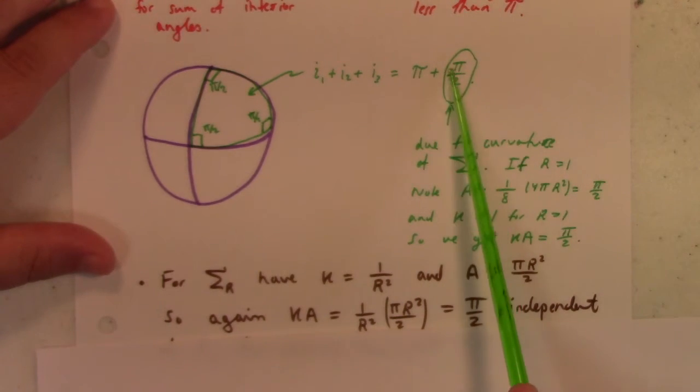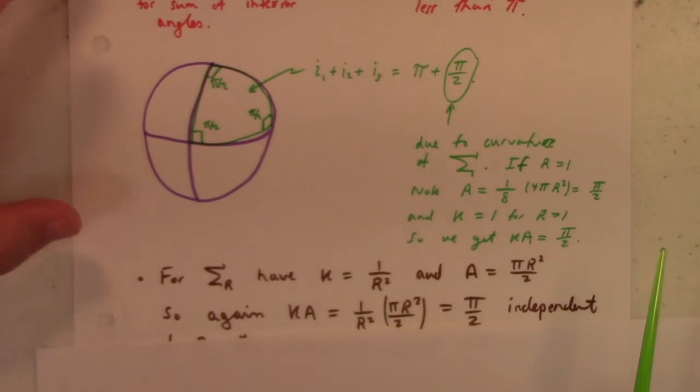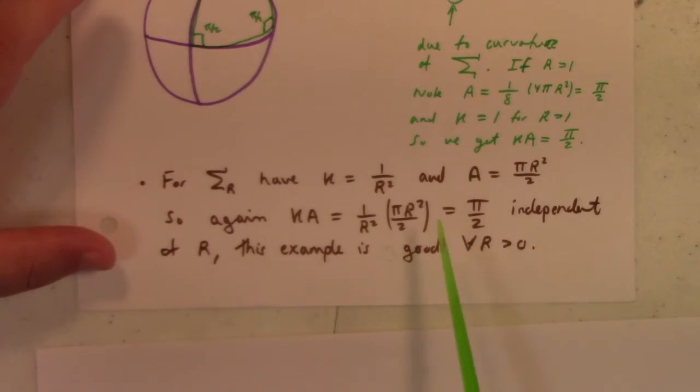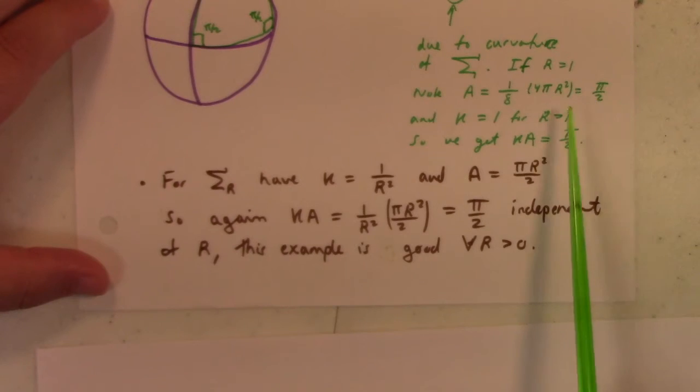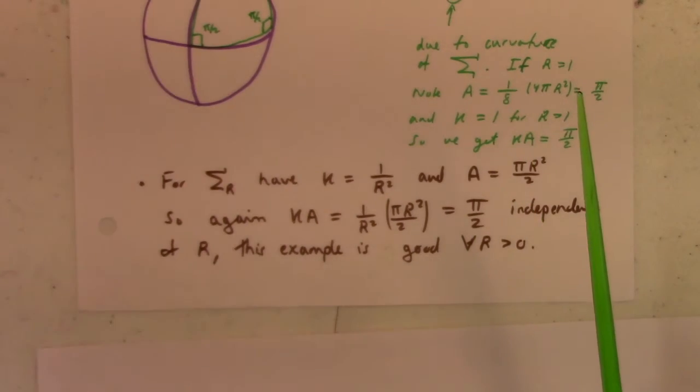The sum of the interior angles is π plus π/2, that term coming from the positive curvature of the sphere. You can generalize this to a sphere radius r, and r's cancel because the Gaussian curvature is 1/r². You get k as π/2 independent of the radius, so this example works for all radii.